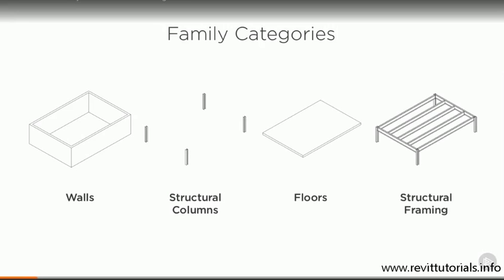Each family category has different associated properties. For example, the wall category has a base level and a top level, which defines the height of the wall. It also has properties which govern the build-up of the wall, each different layer in the wall and its associated thicknesses and materials.